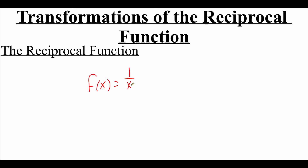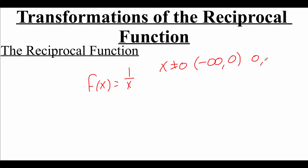Now, because this is a fraction, we need to make sure that there isn't 0 on the bottom of the fraction. So in this case, x cannot equal 0 as far as the domain. So in interval notation, that would run from negative infinity up to 0, and then from 0 up to positive infinity, and we're going to use our union notation in there.